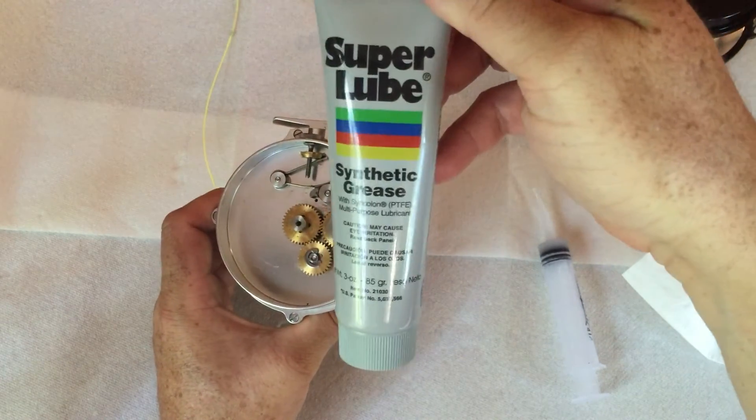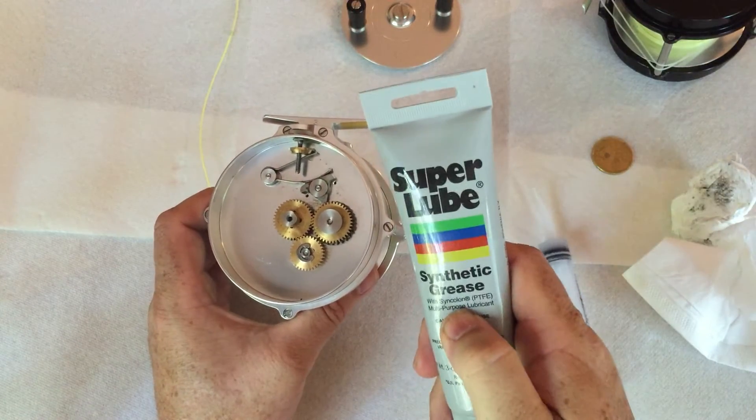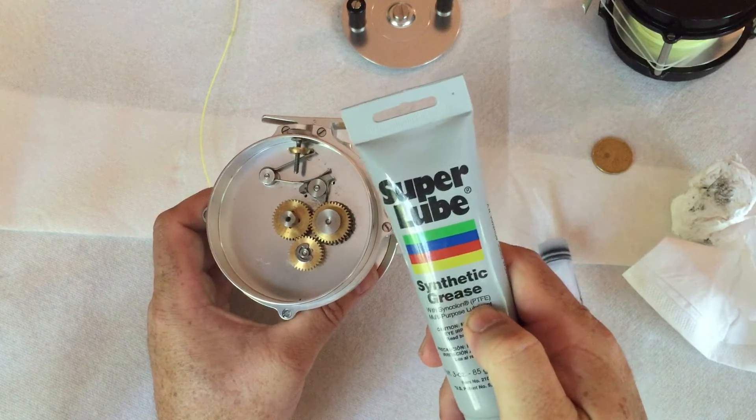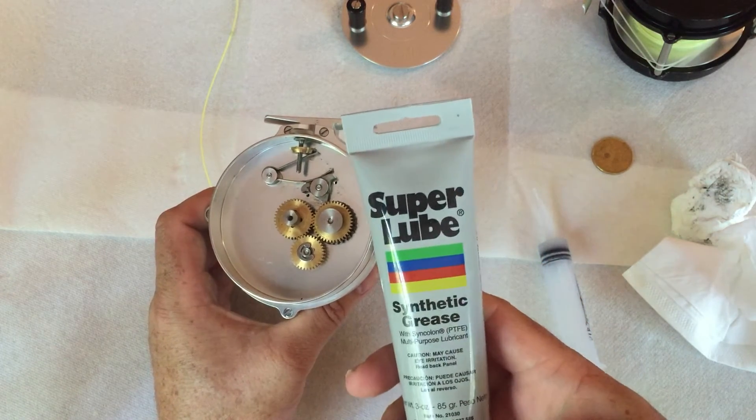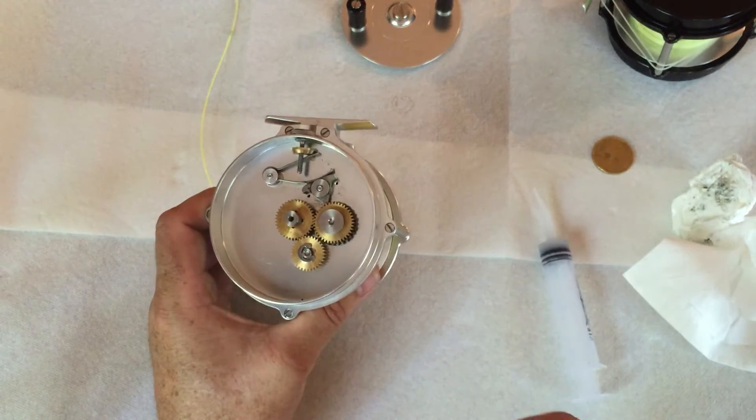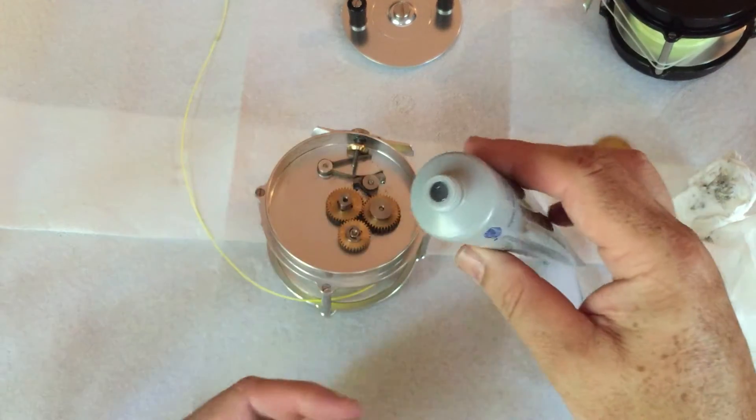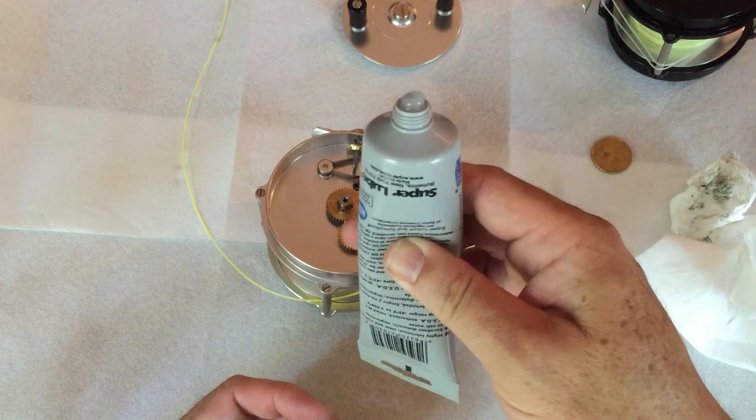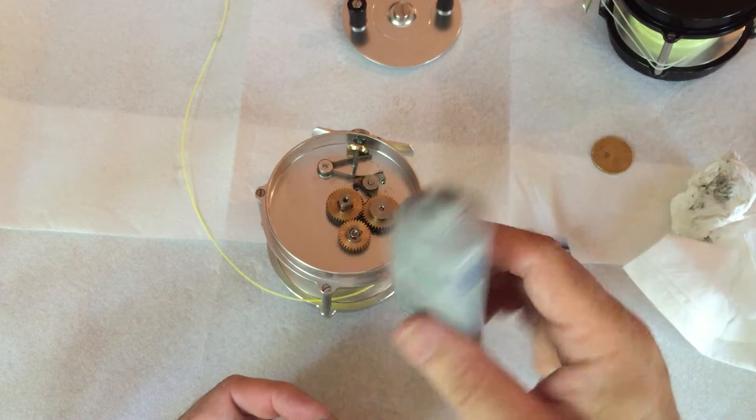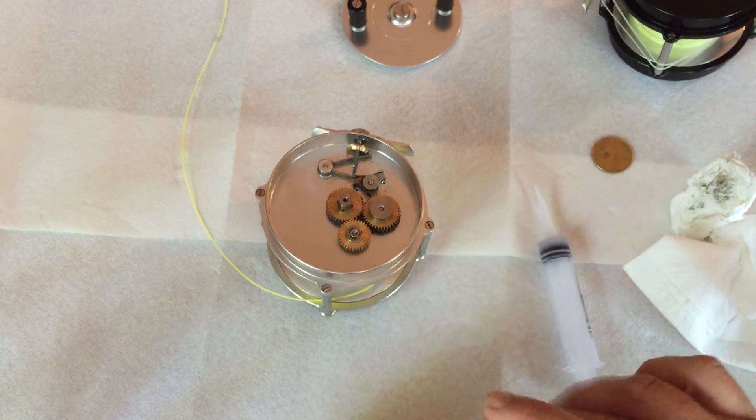I use Super Lube synthetic grease, and I distinguish this one with PTFE or Teflon. This grease holds up really nicely. It's a little bit transparent, as you can see, but its viscosity doesn't seem to change with heat or cold weather.